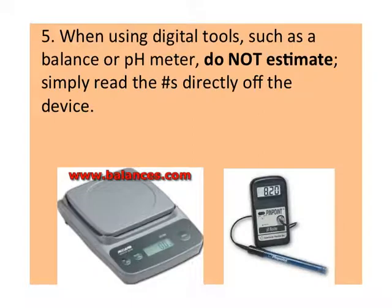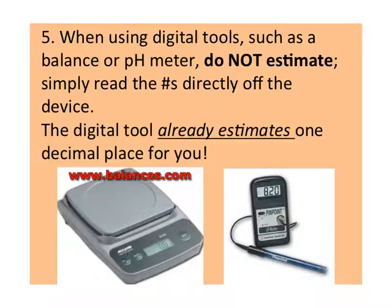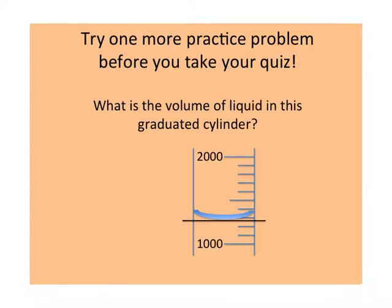Rule number five: when using digital tools such as a balance or a pH meter, do not ever estimate. Simply read the numbers directly off the device. The reason being is that the digital tool already estimates one decimal place for you — that's why you don't need to estimate at all.